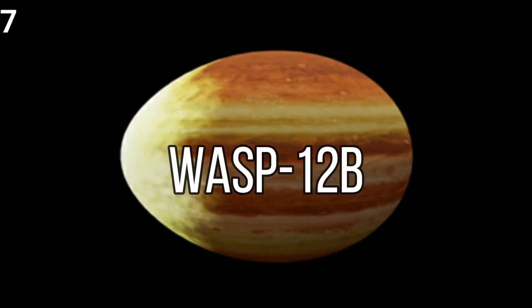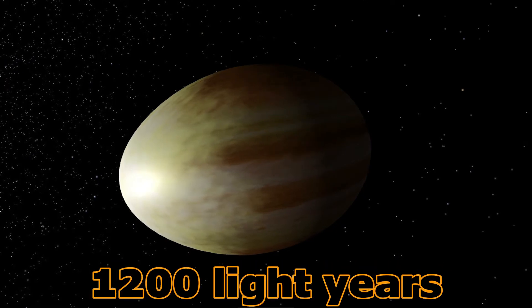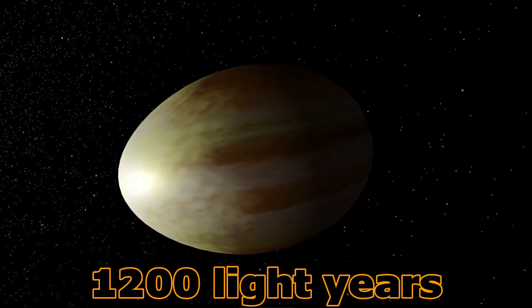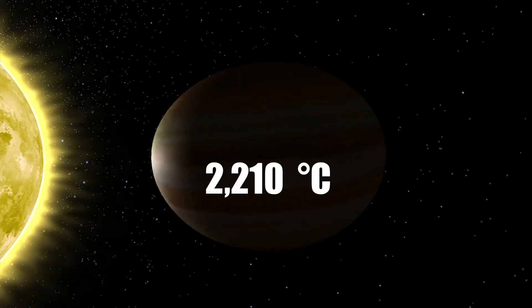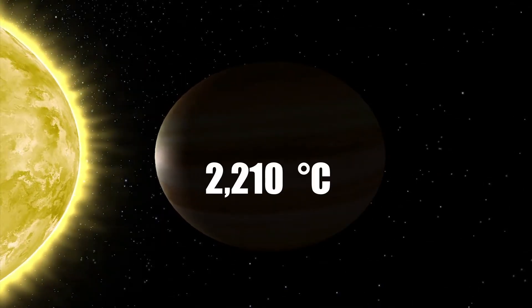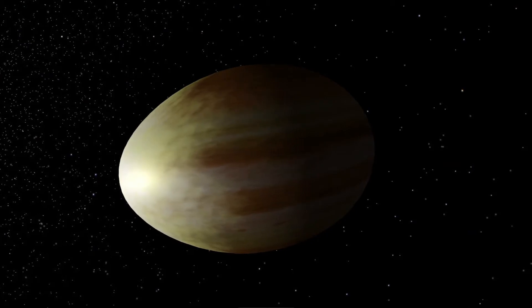Number 7: WASP-12b. This exoplanet is located 1,200 light years from Earth, is almost two times the size of Jupiter, and its temperature is approximately 2,210 degrees Celsius. It looks unique with its egg-like shape.